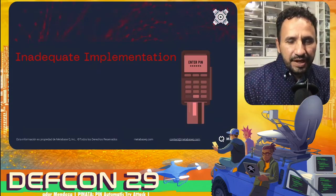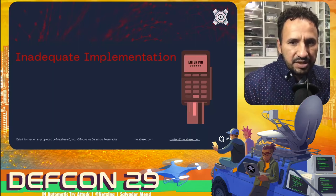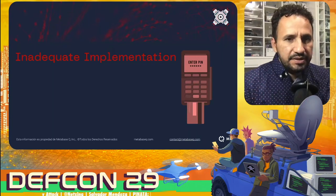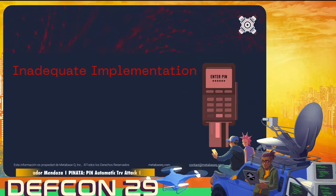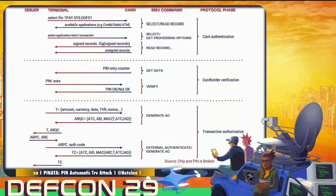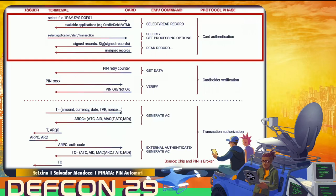After analyzing the APDU protocol and the ELMA prototype, let's talk about the inadequate implementation to reset the PIN retry counter in EMV cards. When a transaction starts, we have: card identification, cardholder verification, and then transaction authorization. In the card identification step, the terminal sends commands to list the applications and determines what kind of card is being used — Visa, MasterCard, American Express, etc. The cardholder verification step is where the terminal prompts for a PIN entry or a signature.